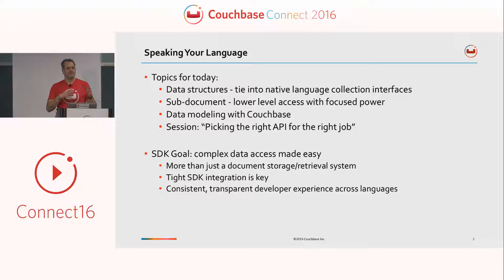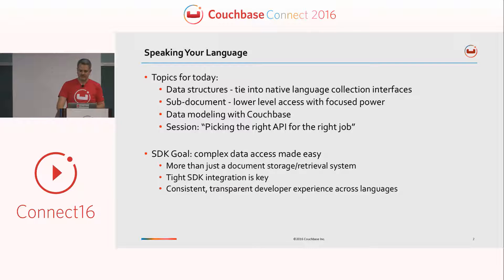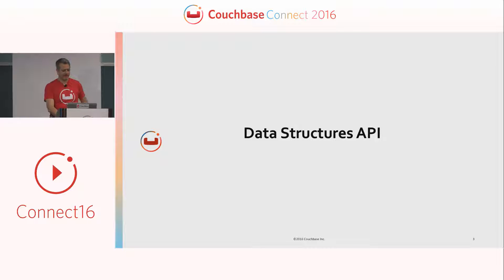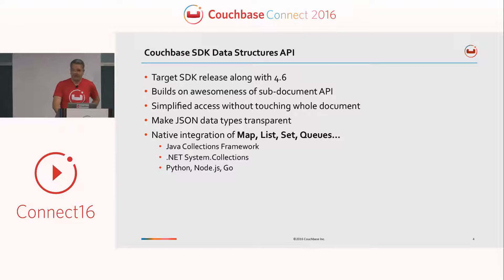Function names and calls, we try to align them all so that you can shift and switch as appropriate and still have the same usage and expectation as a developer. First, we're talking about what we're calling our data structures API. We have it available right now as an experimental test product, targeting release in our SDK package with Couchbase 4.6 in the new year.